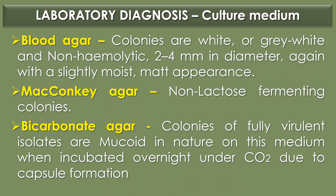In blood agar, Bacillus anthracis colonies are white or gray-white and non-hemolytic, 2 to 4 mm in diameter, with a slightly moist or matte appearance.